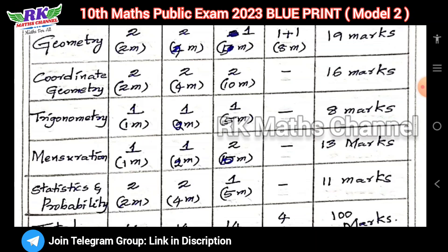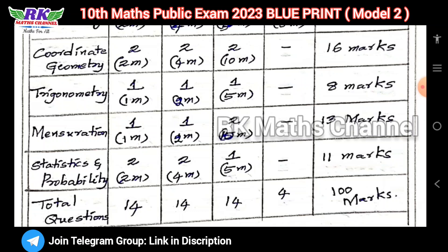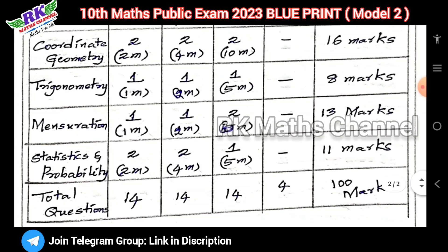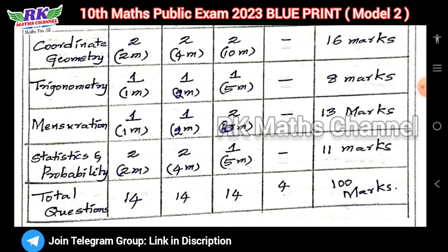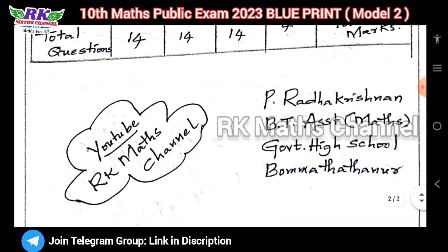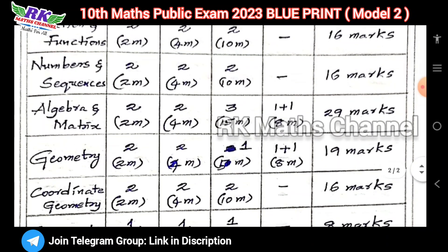Trigonometry: 1-mark is 1, 2-mark is 1, 5-mark is 1, totalling 8 marks. Mensuration: 1-mark is 1, 2-marks is 2 questions, 5-marks is 2 questions, 1 question each. So 8 chapters total equal 100 marks. This is the Blueprint Model 2 for the 10th class Public Exam.